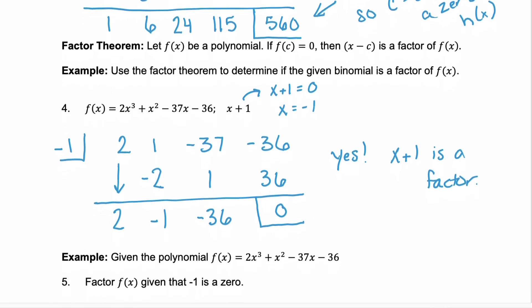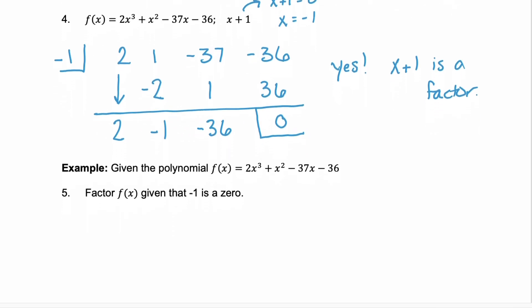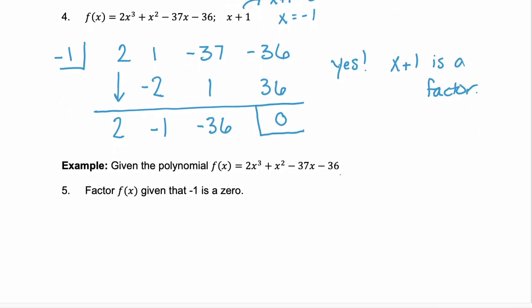So we're going to use this to help us with example 5. Notice we have the exact same polynomial. It's given that negative 1 is a zero — we just verified that above. We divided by the zero of negative 1, got a zero. So it's true that x plus 1 is a factor. What we have left — the quotient — is a polynomial that we're going to see if we can factor further. This remaining polynomial is 2x squared minus x minus 36.